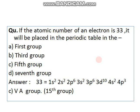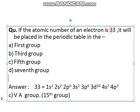The question is: if the atomic number of an element is 33, it will be placed in the periodic table in which group? Option A: first group, Option B: third group, Option C: fifth group, Option D: seventh group. To solve this, we write the electronic configuration: 1s2 2s2 2p6 3s2 3p6 3d10 4s2 4p3. The last subshell is 4p3, which tells us this element belongs to the fifth group.